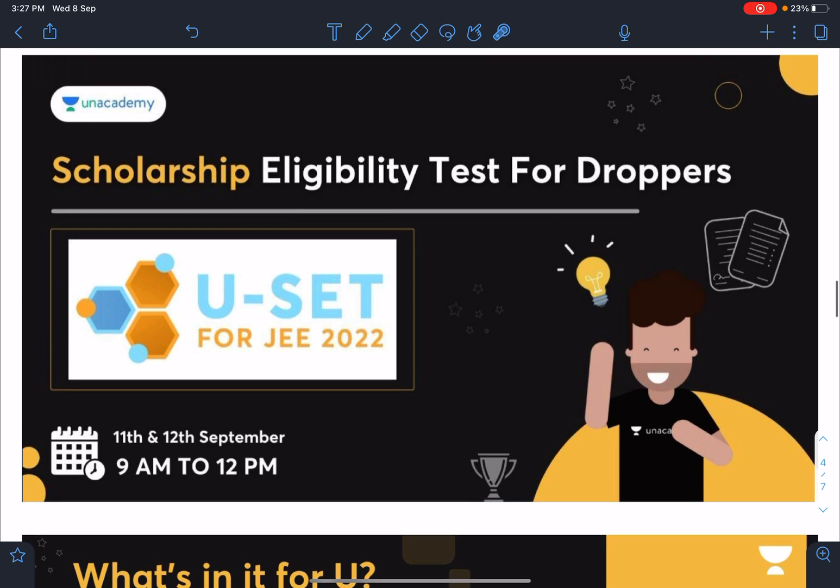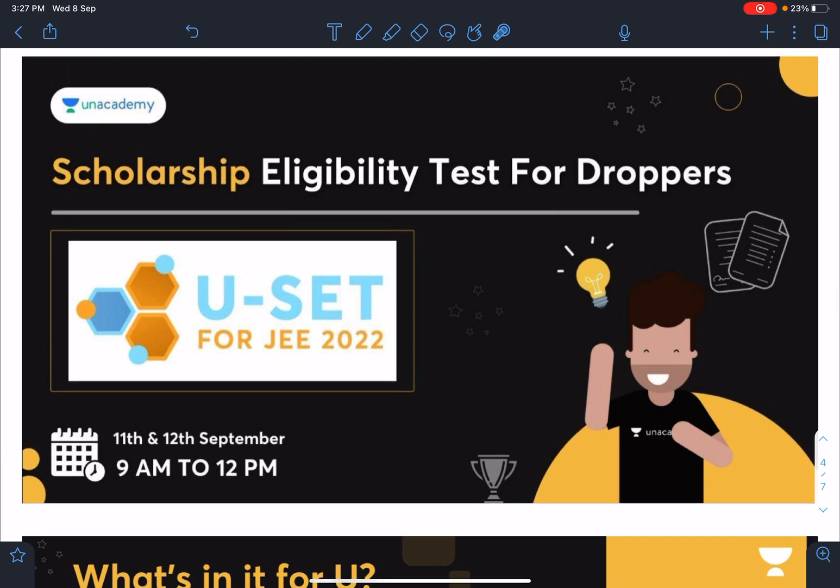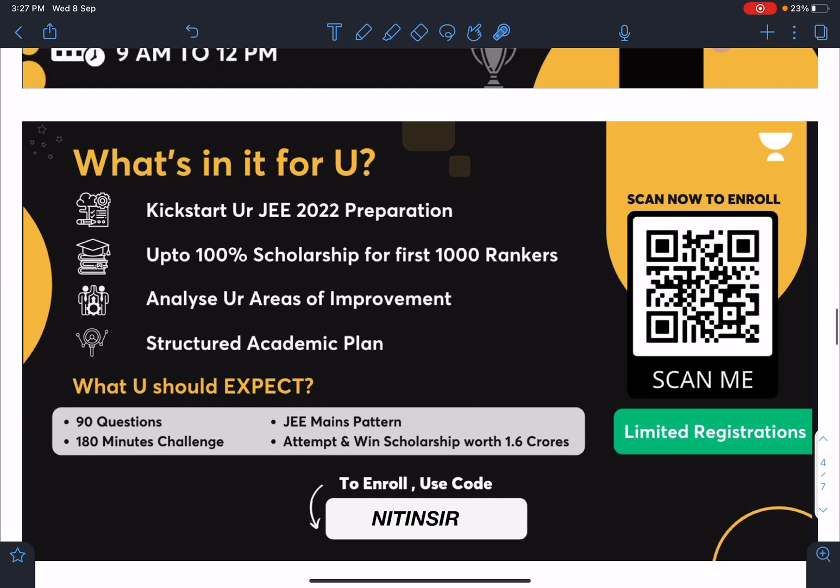Guys there is some information about scholarship eligibility test for droppers for JEE 2022. This test is going to happen on 11th and 12th September 9 am to 12 pm. You can write this test and there will be up to 100 percent scholarship for first thousand rankers.